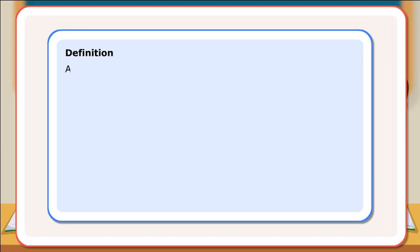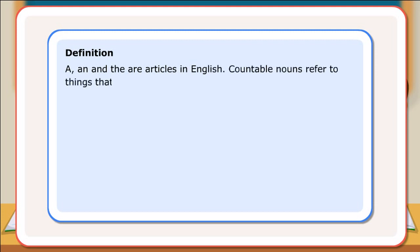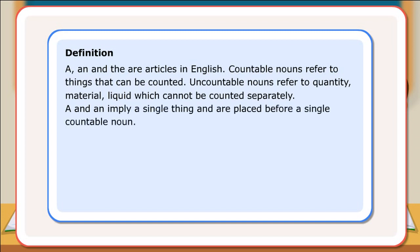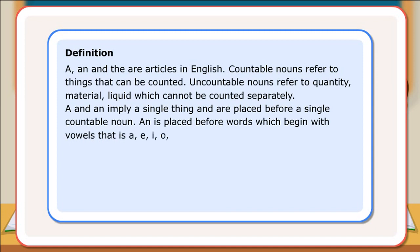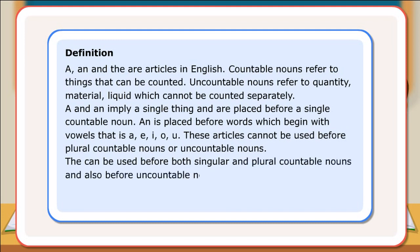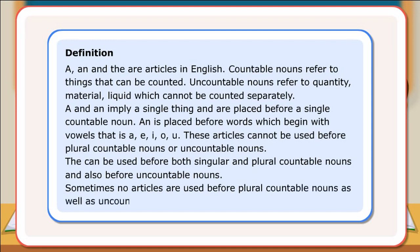Definition: A, an, and the are articles in English. Countable nouns refer to things that can be counted; uncountable nouns refer to quantity, materials, or liquid which cannot be counted separately. 'A' and 'an' imply a single thing and are placed before a single countable noun. 'An' is placed before words which begin with vowels — a, e, i, o, u. These articles cannot be used before plural countable nouns or uncountable nouns. 'The' can be used before both singular and plural countable nouns and also before uncountable nouns. Sometimes no articles are used before plural countable nouns as well as uncountable nouns.